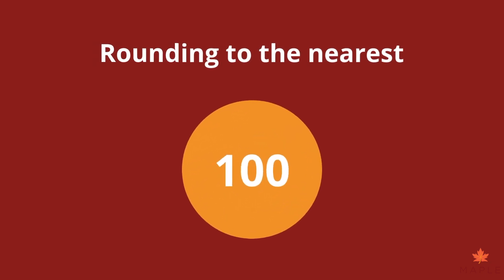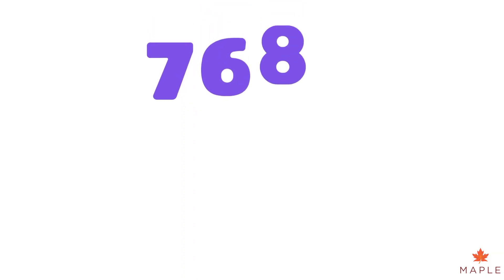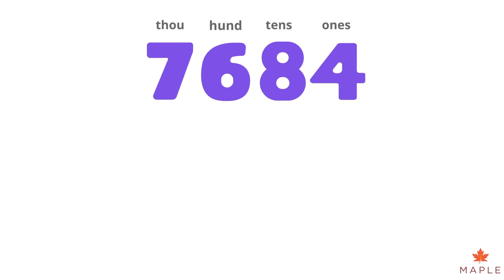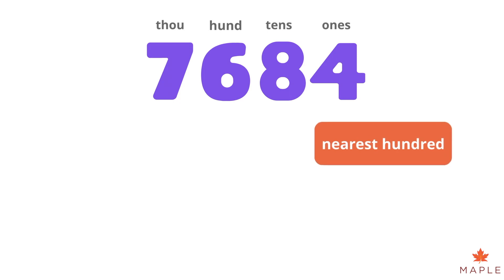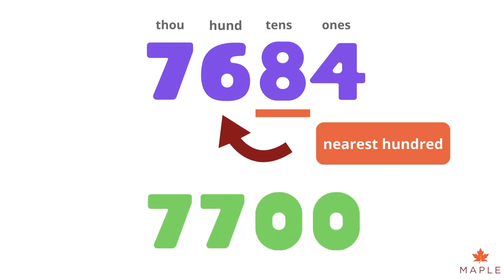Rounding to the nearest hundred. Let's look at this number: seven thousand six hundred and eighty-four. We want to round it to the nearest hundred, so we look at the tens column. If the tens digit is less than fifty, the number is rounded down. If the tens digit is fifty or more, the number is rounded up. The eight in the tens column is more than five — it represents eight tens or eighty — so we round it up. The answer is seven thousand seven hundred.